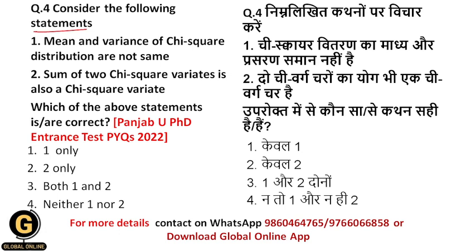Consider the following statements. Statement 1: Mean and variance of chi-square distribution are not the same. Statement 2: Sum of two chi-square variates is also a chi-square variate. Which of the above statements is or are correct? Let us see which statements are correct and which are wrong.